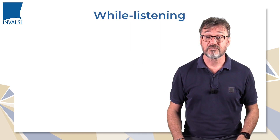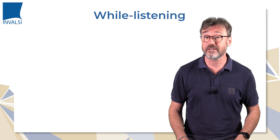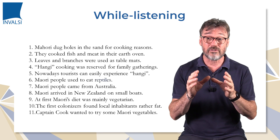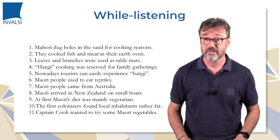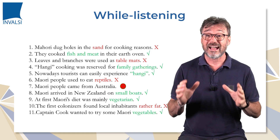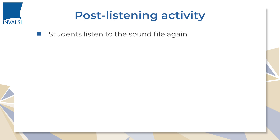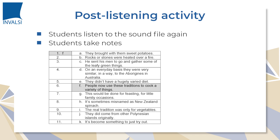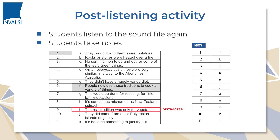After this preparatory phase, the class is now ready for the listening task and the while-listening activities. Students are given a series of statements about the contents of the sound file and have to decide if these are right or wrong. Then they must expand the information gathered and reconstruct the original information. To conclude the comprehension activities, students listen to the sound file again and take notes. Then we give them a list of utterances which are all part of the interview but are not in the correct order — there's also an extra item, a distractor, that they should not use. Students, in pairs, must reconstruct the right sequence on the basis of their notes. You can find all the materials by clicking on the links below.